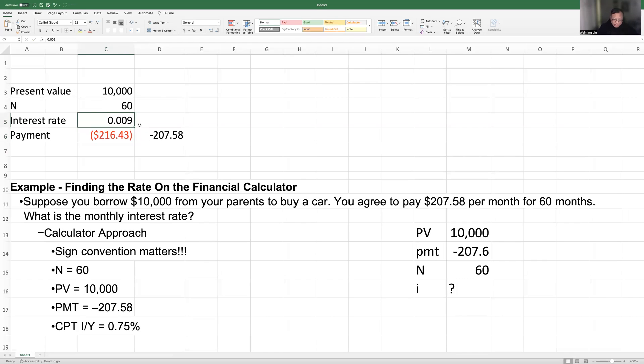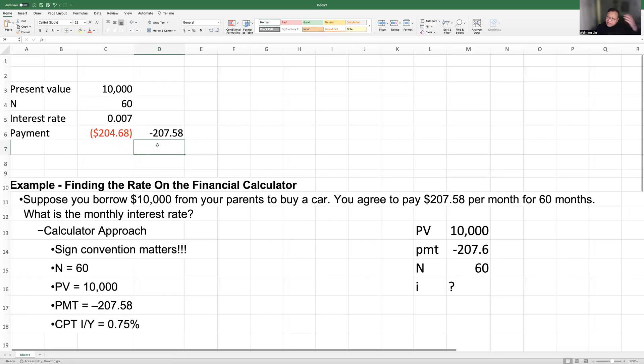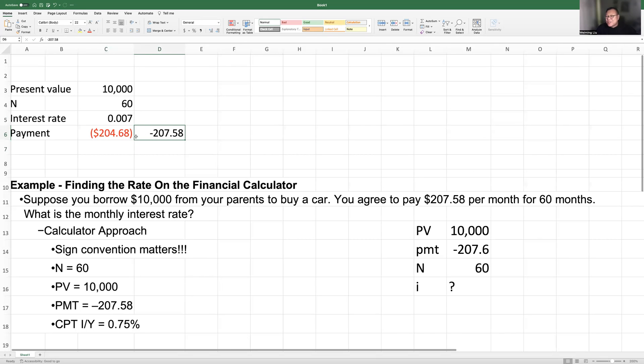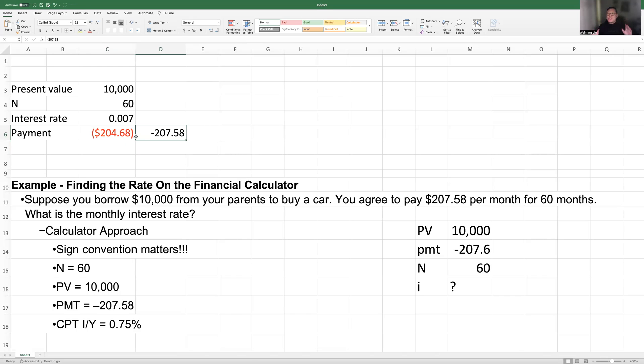Now this is less, right? So now you need to increase the interest. This is trial and error. You try and see the payment compared to the target. This is too much work. So I'm going to teach you something that you can do this very quickly.